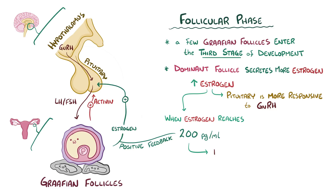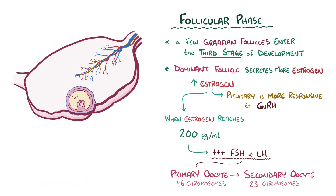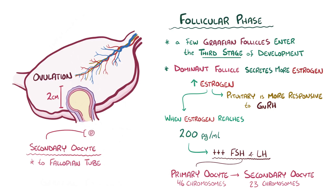The positive feedback signal makes the pituitary secrete a whole lot of FSH and LH in response to GnRH. This triggers the primary oocyte within the dominant follicle to finally complete meiosis I and turn into a secondary oocyte, which has 23 chromosomes. The dominant follicle completes its third stage of development in a blaze of glory called ovulation — when the nearly 2cm-sized follicle ruptures and releases the tiny secondary oocyte into the fallopian tube. The secondary oocyte stops in metaphase of meiosis II and waits for fertilisation as the menstrual cycle transitions into the luteal phase.